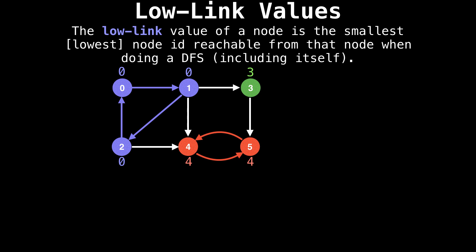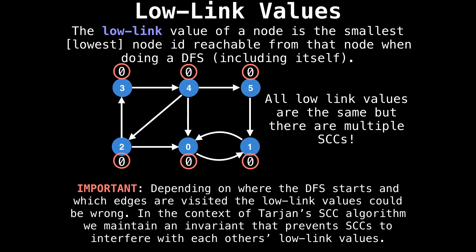The flaw with this technique is that it is highly dependent on the traversal order of the depth first search, which for our purposes is at random. For instance, in the same graph, I rearrange the node IDs as though the depth first search started at the bottom middle node, and in such an event, the low link values will be incorrect. In this specific case, all the low link values are the same, but there clearly are multiple strongly connected components.